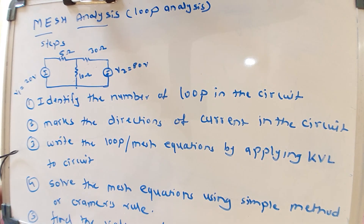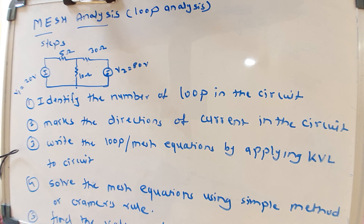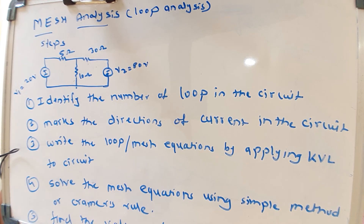Hello students, welcome to the lecture series on circuits and networks, or network theory. Today we will see what is mesh analysis, which is also called loop analysis. In mesh analysis, we first identify the number of loops in the circuit. A loop is a connection of branches at different nodes — basically a circular electrical network with current passing through it in clockwise or anti-clockwise direction, depending on the sources connected.